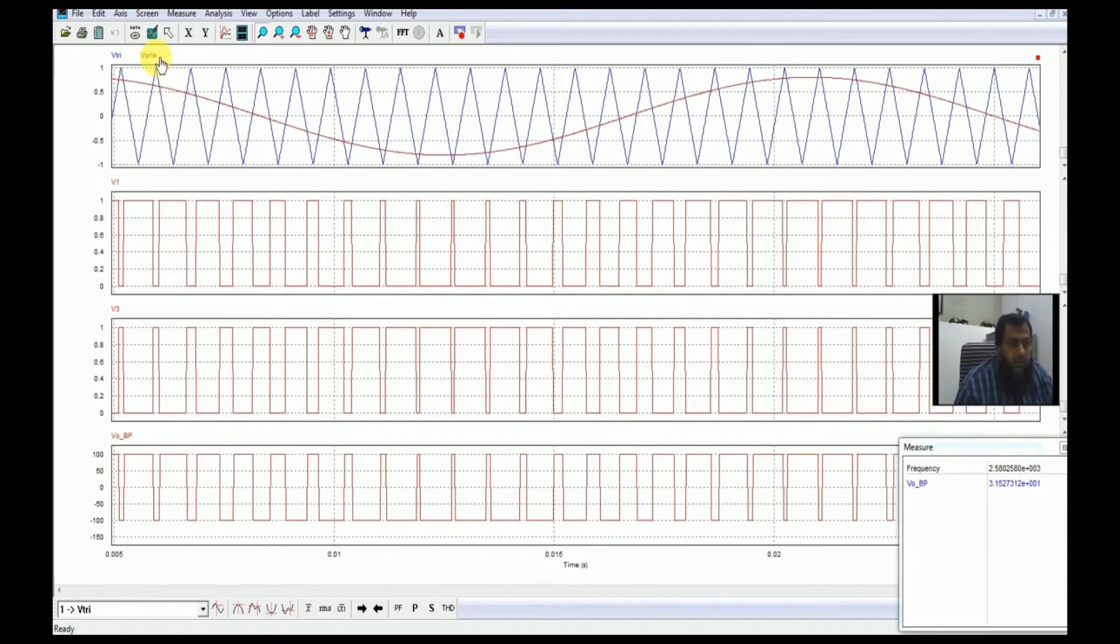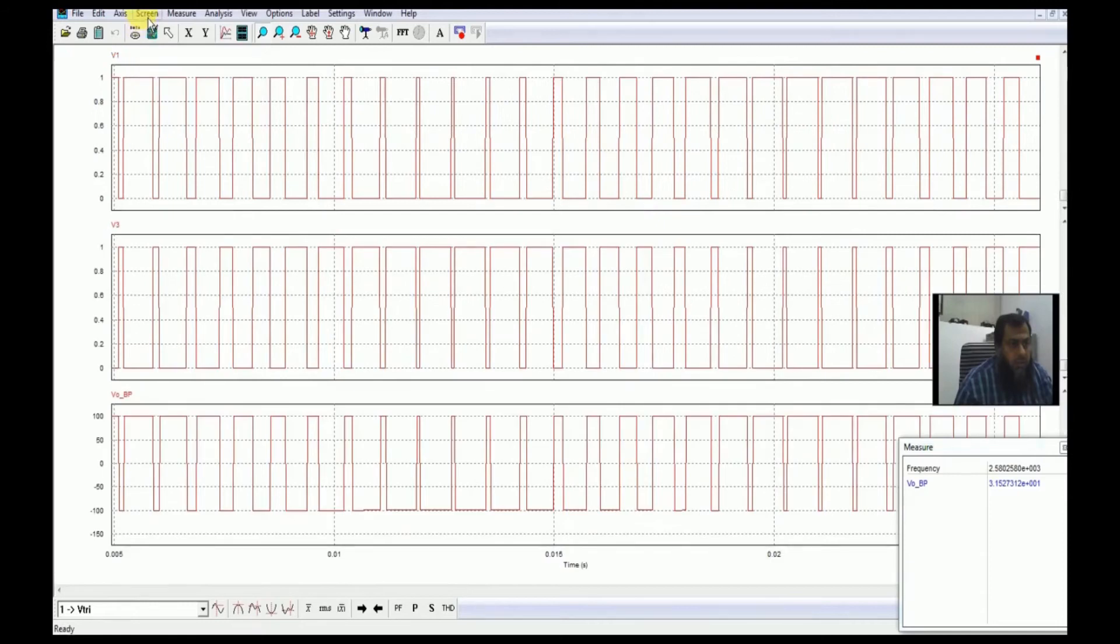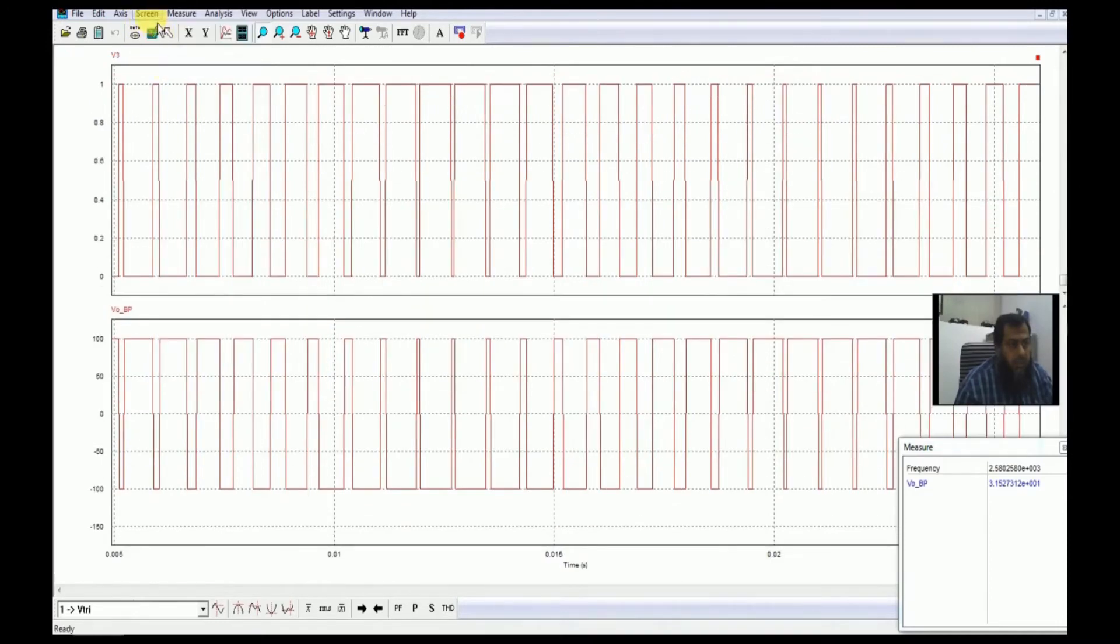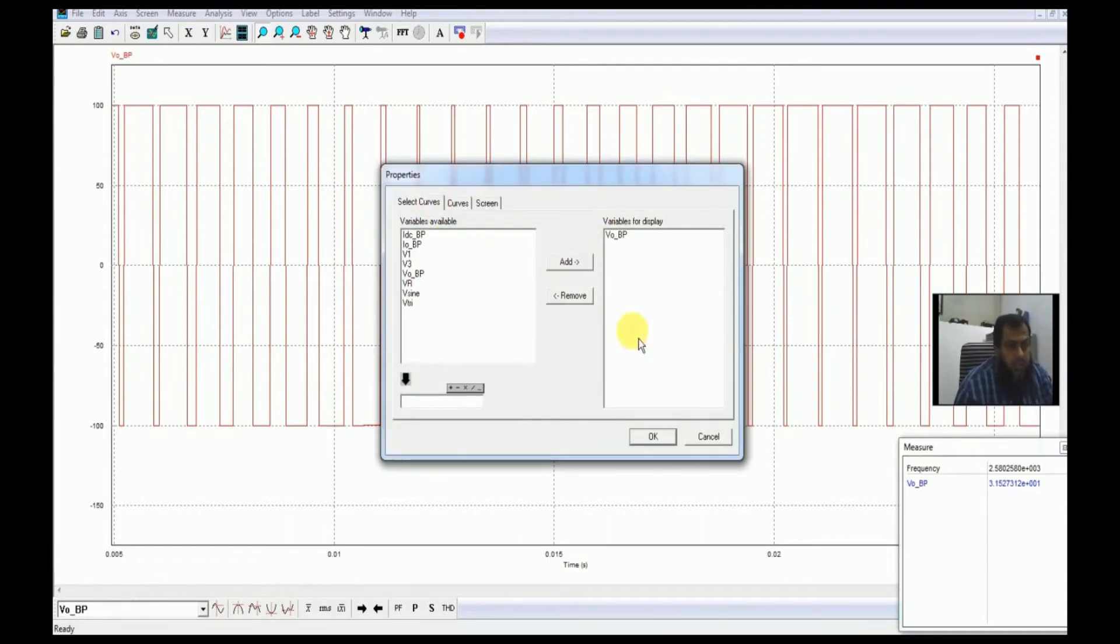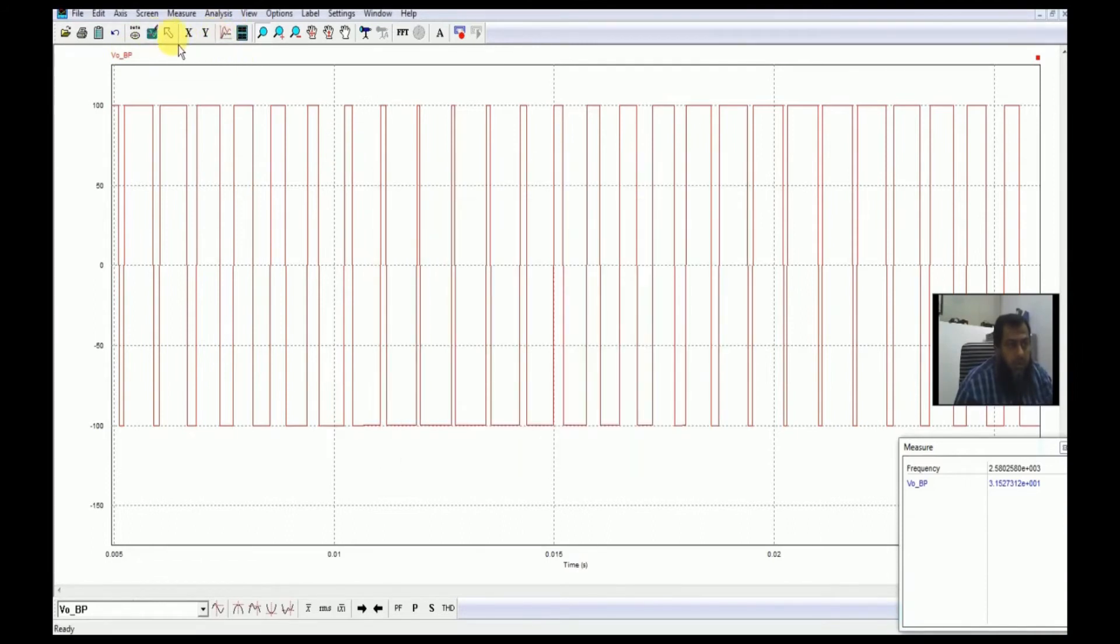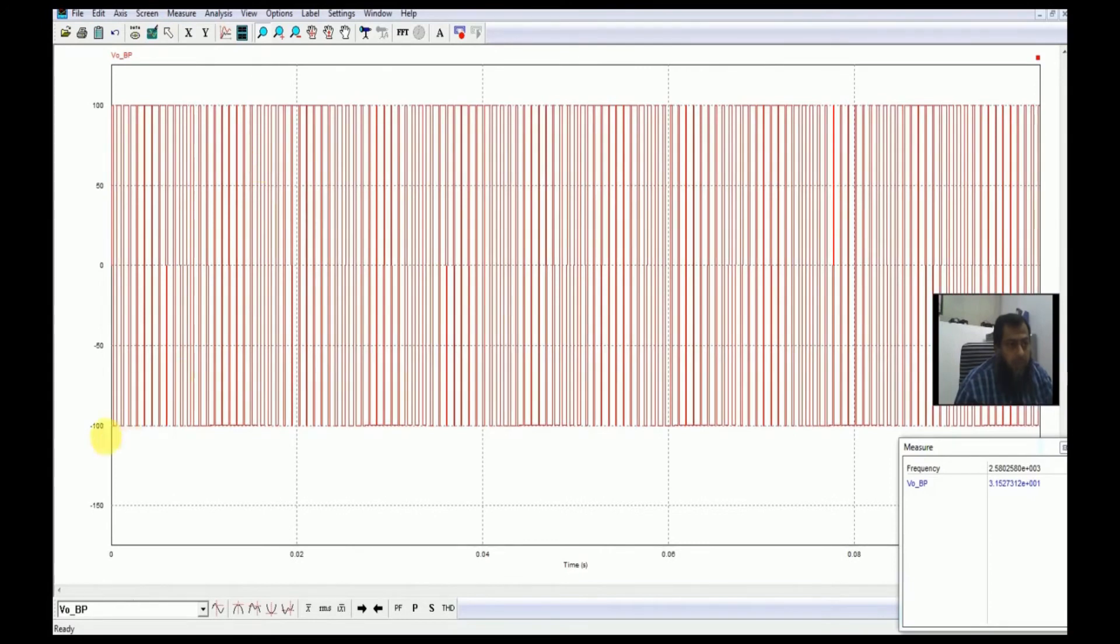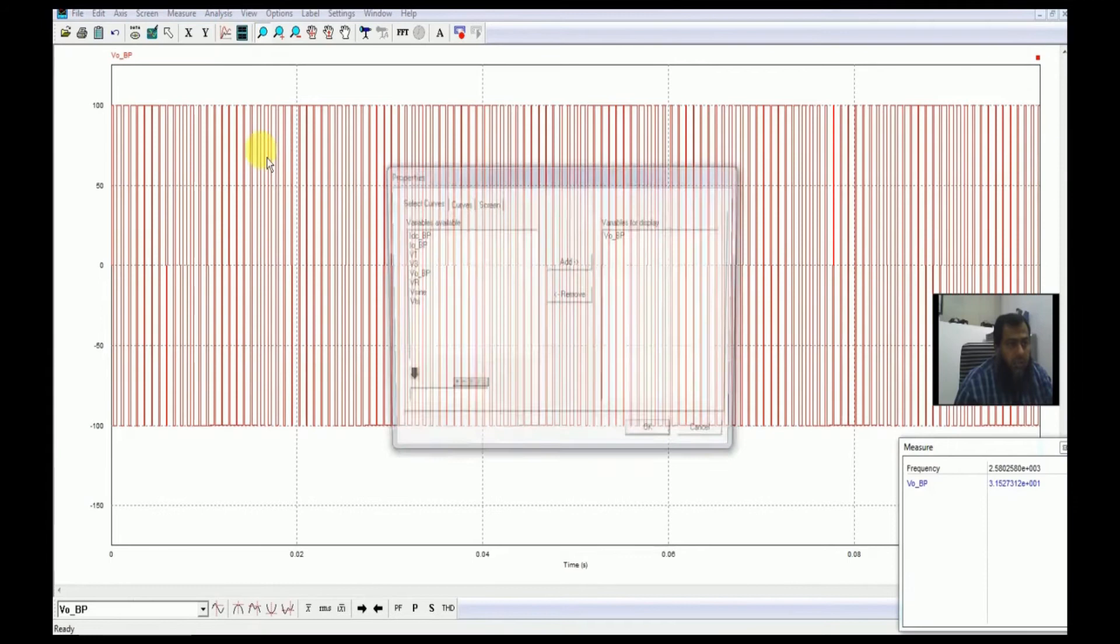Let us draw some of the output waveforms. This is the output of a bipolar PWM. It is toggling between minus 100 to 100.